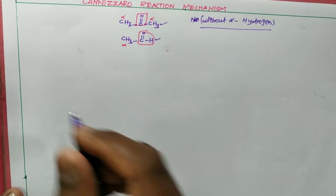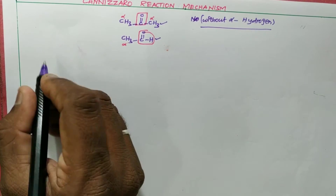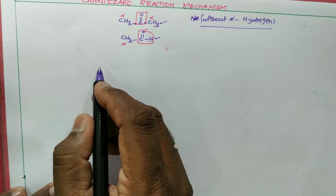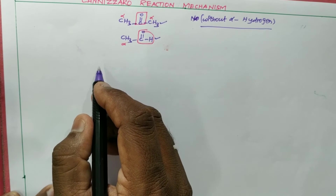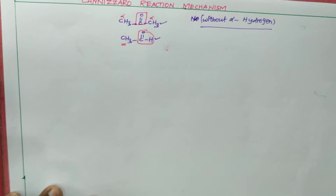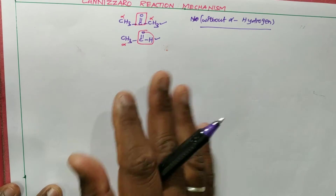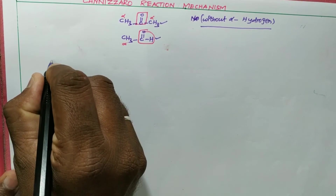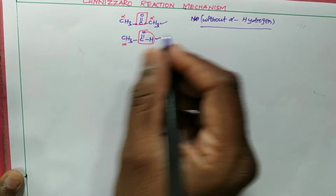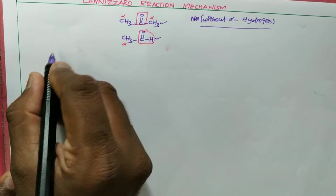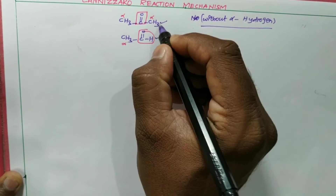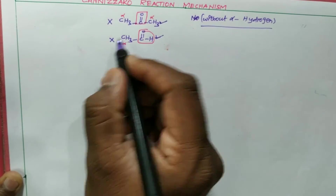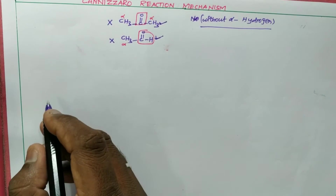Let's see the mechanism and how it takes place. This reaction is otherwise called a disproportionation reaction. Why? Because if I take an alpha hydrogen-containing molecule, those molecules will not be involving in the Cannizzaro Reaction.